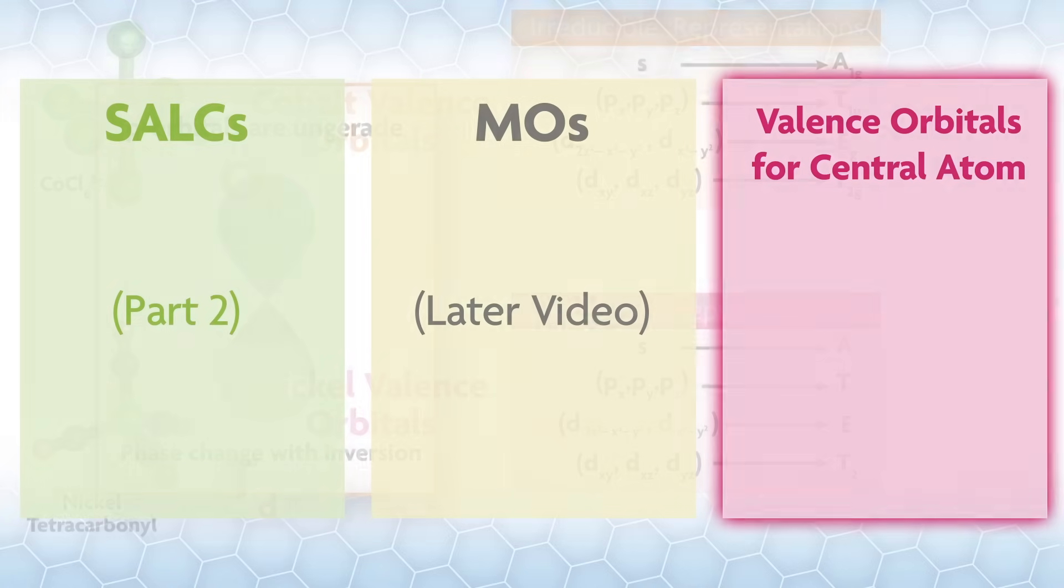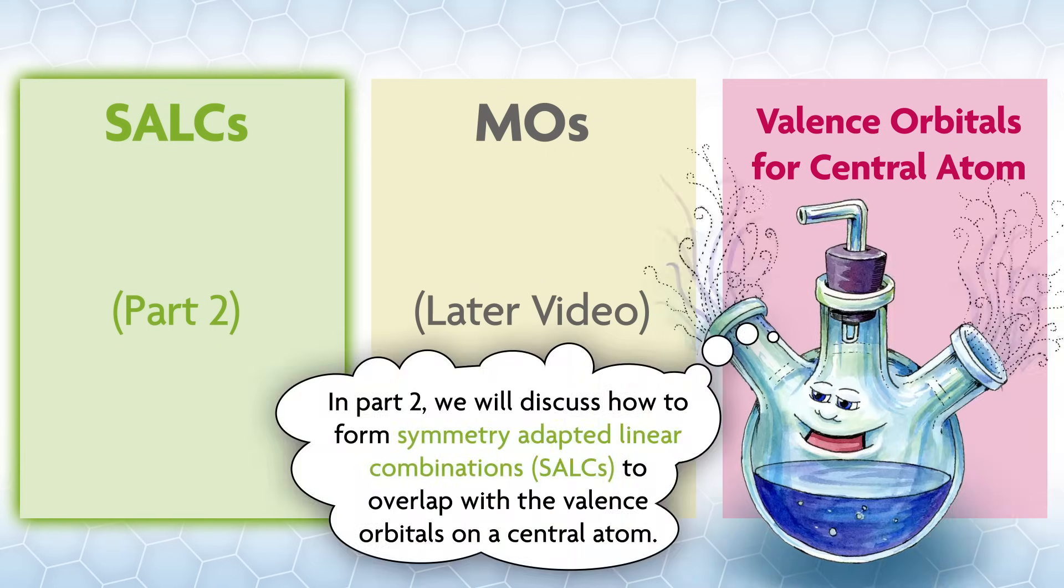In this video, we tried to give you an idea of what a representation is, at least in the context of MO theory, and we found the valence orbital symmetries for a central atom. In part two, we will discuss how to form symmetry adapted linear combinations to overlap with the valence orbitals on the central atom.